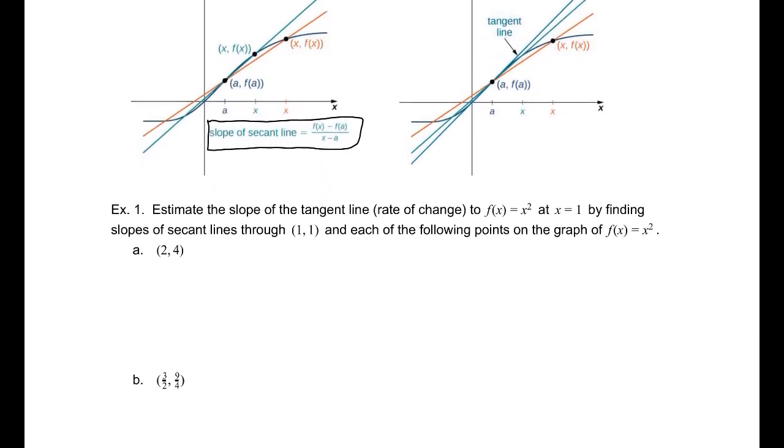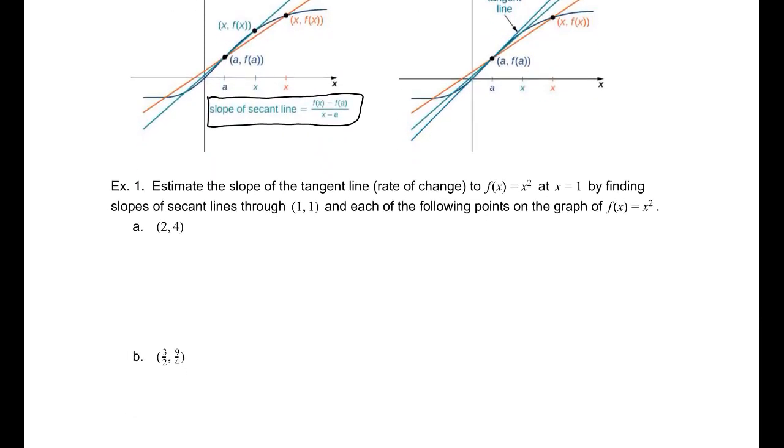So let's estimate, in example one, the slope of the tangent line, or the rate of change, to f of x equals x squared at the point x equals 1. But we're going to find the slope of secant lines through (1,1) and some other points. Now, this equation for the slope of the secant line is f of x minus f of a divided by x minus a.